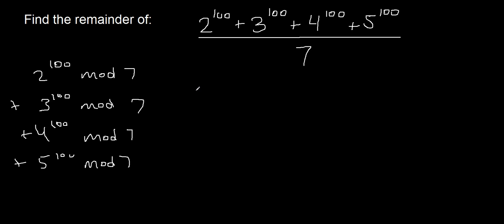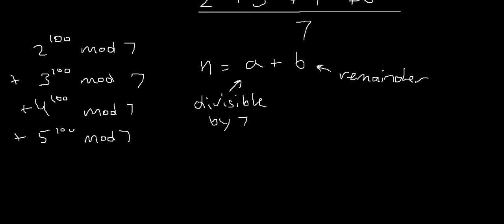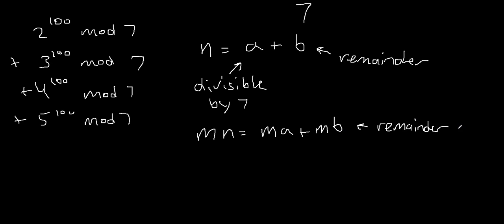Let's start with 2 to the power of 100. You can write any integer n as a sum of a number that's divisible by 7 plus the remainder. Now let's try applying different functions to this. If we multiply this number by m, then m times n will be m times a plus m times b. Now m times a is still divisible by 7, but m times b means the remainder gets multiplied by m.